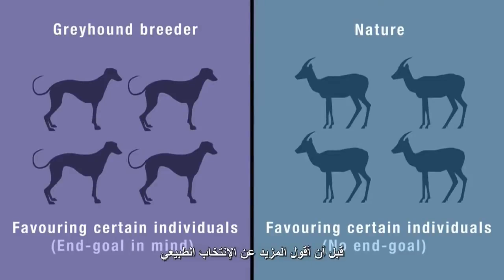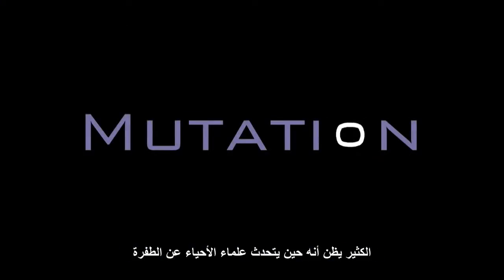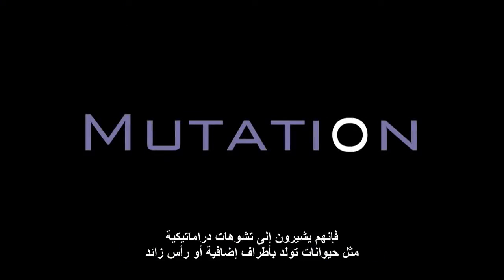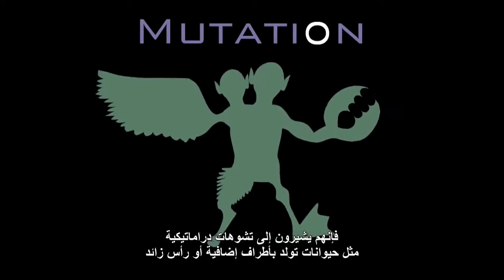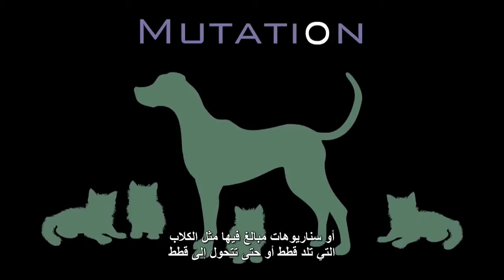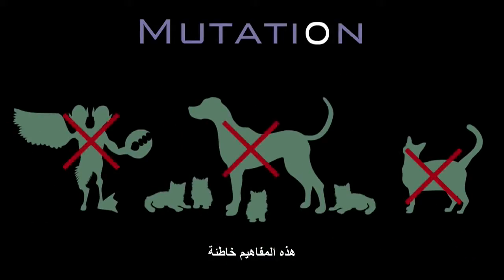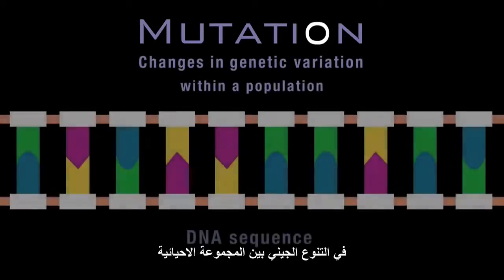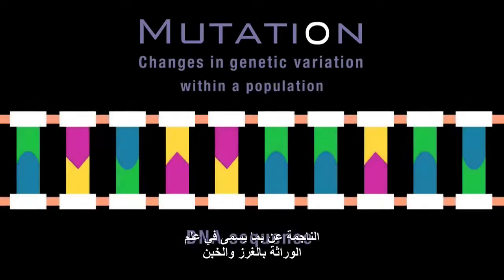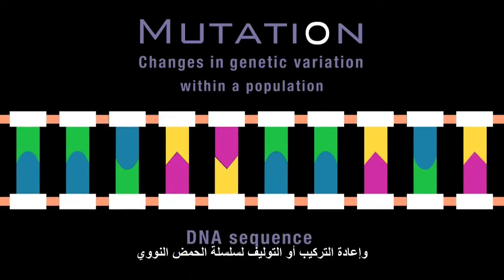Another commonly misunderstood term is mutation. Many think that when biologists talk about mutation, they're referring only to dramatic malformations like animals with extra limbs or heads, or far-fetched scenarios like dogs producing cats or morphing into cats. These are misconceptions. Mutations are simply changes in genetic variation within a population, brought about by insertions, deletions, and recombinations of the DNA sequence.